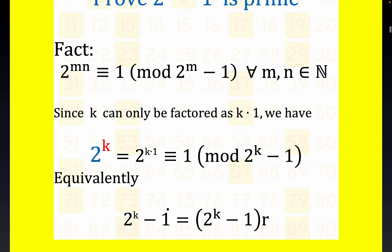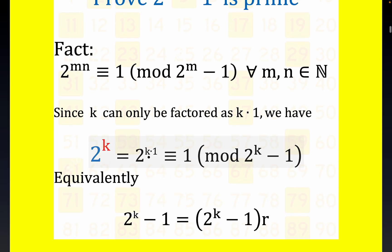Now, notice that this particular congruence, 2 to the k times 1, I put the 1 there for emphasis, emphasizing k is prime, and it's the only factorization of k. It means this, where r is just some integer. It means 2^k - 1 is some multiple of 2^k - 1, notice I use r for our multiple.